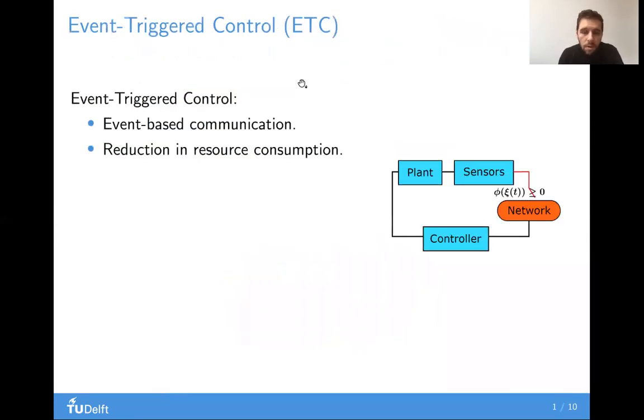Event-triggered control is a sampling paradigm in networked control systems, where the components of the system communicate only when certain events happen. Numerous studies in the past two decades have shown that ETC reduces resource consumption, such as energy and bandwidth.